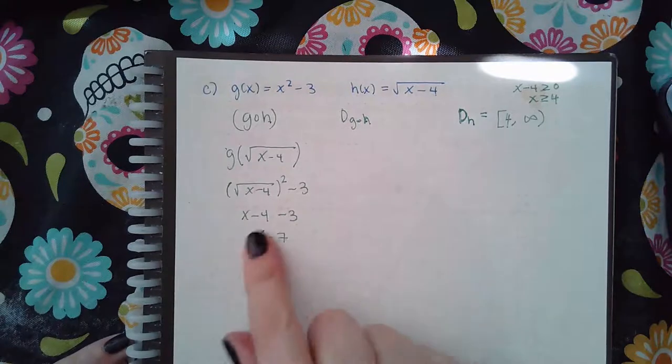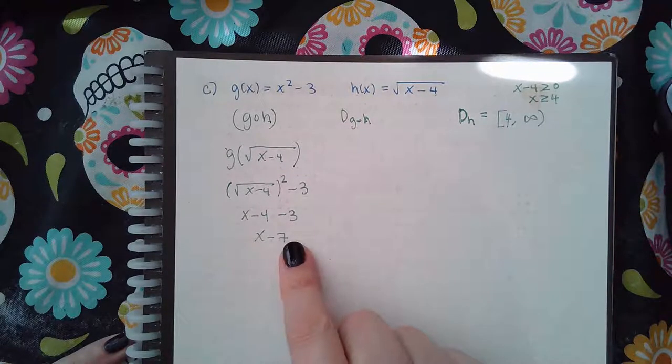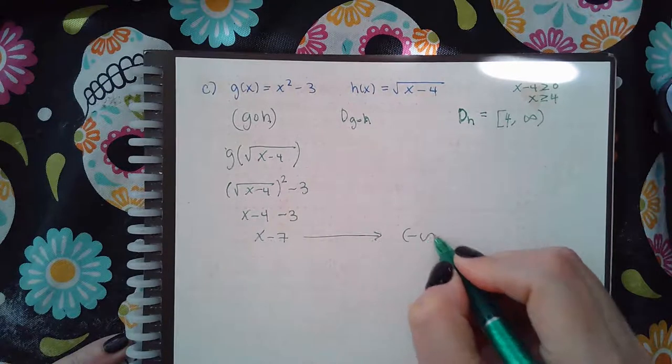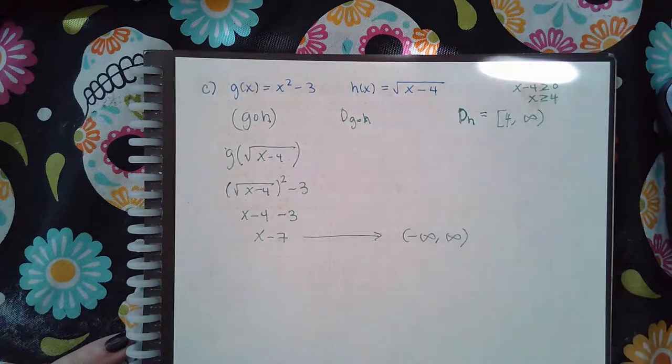Okay? So if I look at this, right? This is g of h. If I look at this, this has a domain of negative infinity to infinity. Okay? It just does. I could plug anything in and minus 7 and I'll get an answer.